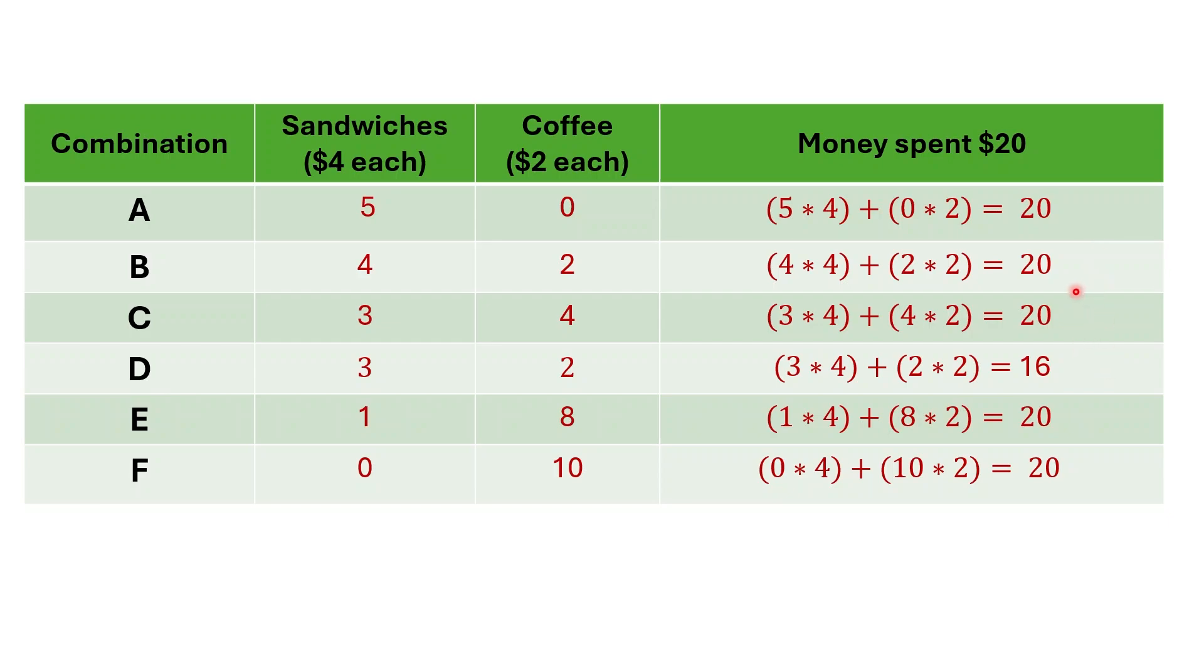Both of these are part of the budget set because they are feasible options within the $20 budget. So remember that the budget set includes all possible bundles the consumer can afford whether they use up the full money or save part of it.